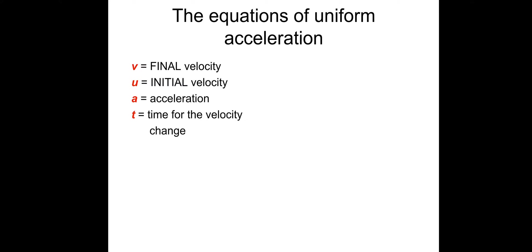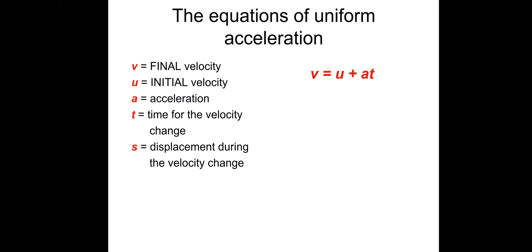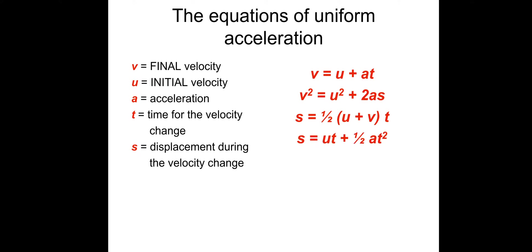The equations of uniform acceleration — these are on your data sheet as well. We need some notation: V is final velocity, U is the initial velocity, A is acceleration, T is time, and S is displacement. Remember, displacement is just distance with direction. The first equation is V equals U plus AT. The second one is V squared equals U squared plus 2AS. Then we've got S equals one-half times U plus V times T. And S equals UT plus one-half AT squared.